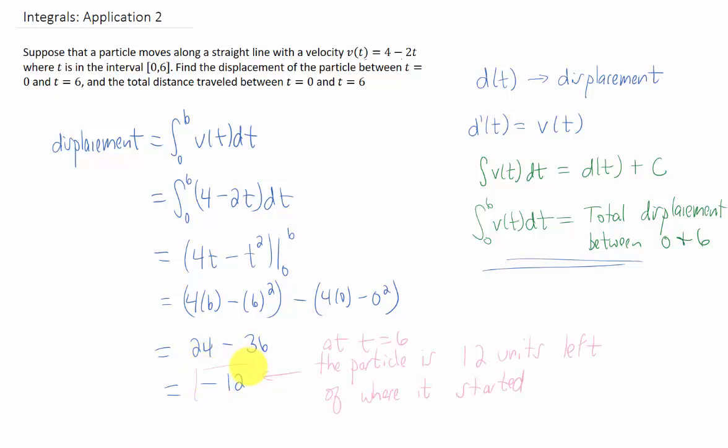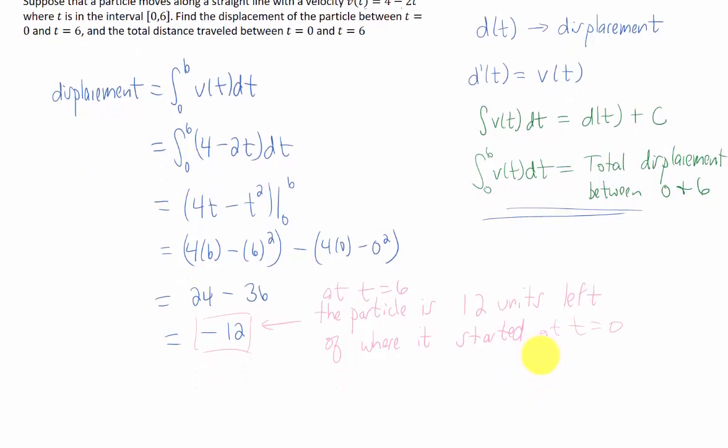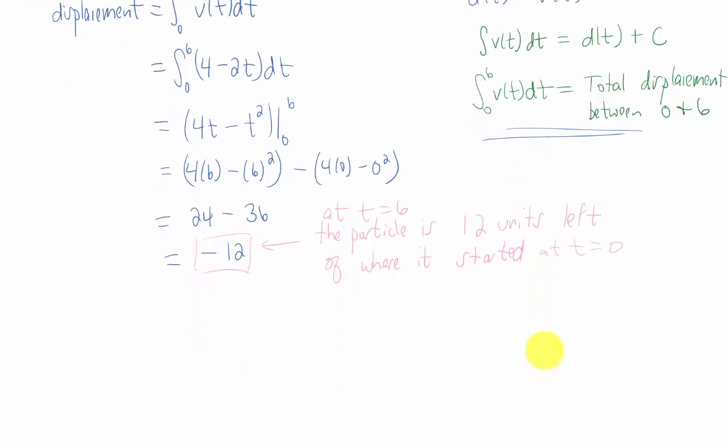And what this result means is that when time equals 6 seconds, the particle ends up 12 units left of where it started at time equals 0. And to give us an idea of how that may have happened, let's look at the velocity function.